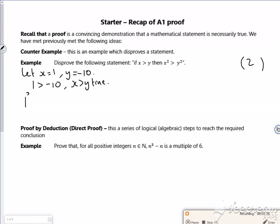But then if I look at 1 squared, that's less than minus 10 squared. So x squared is greater than y squared is false.